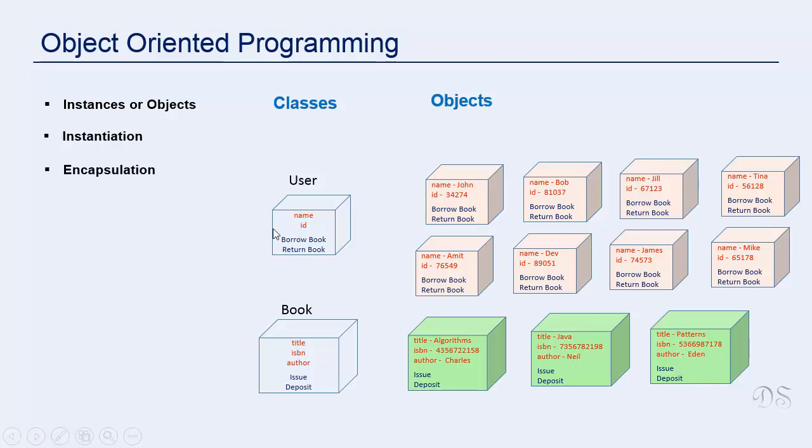Classes encapsulate state and behavior together. This is called encapsulation. State is maintained through variables which are also called data members and behavior is implemented through methods. Methods are like functions but they are defined within a class.